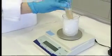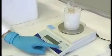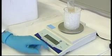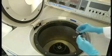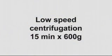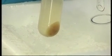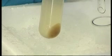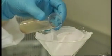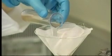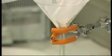Make sure the tubes are equally balanced and do a low speed centrifugation for 15 minutes at 600g. Carefully filter the resulting supernatant into a new centrifuge tube. Try to avoid contamination by the pellet and centrifuge again for 15 minutes at 8500g.